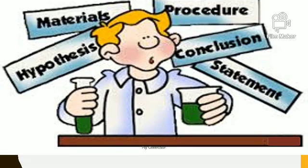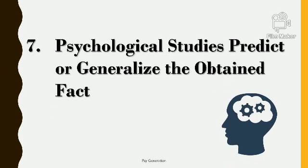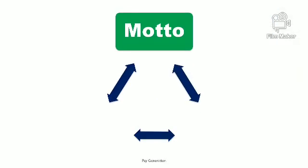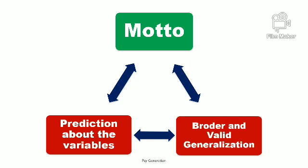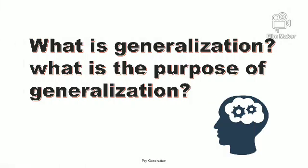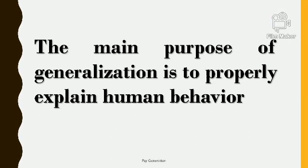Seventh, psychological studies predict or generalize the obtained facts. As described in previous episodes, the main aim of psychological research is prediction about variables — variables ke baare mein poorvakashan karna — along with broader and valid generalization. Now the question is: what is generalization and what is its purpose? Generalization ka uddeshya human behavior ko sahi dhang se samajhna aur explain karna hota hai.